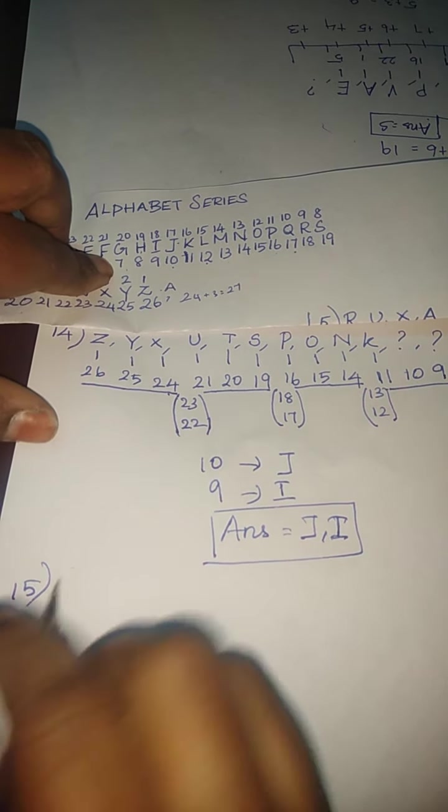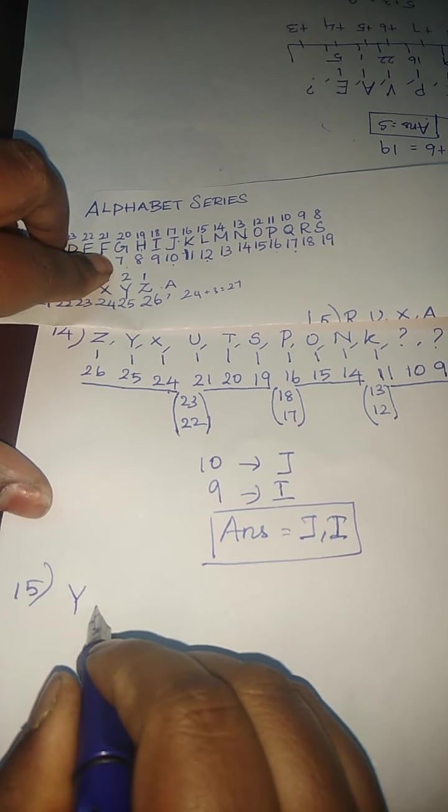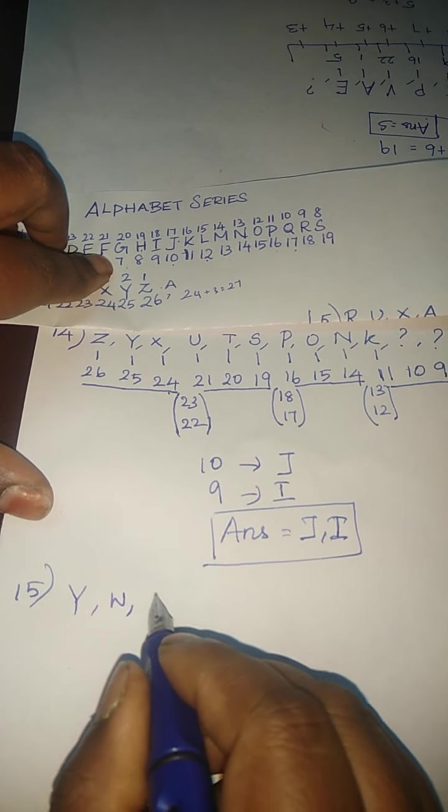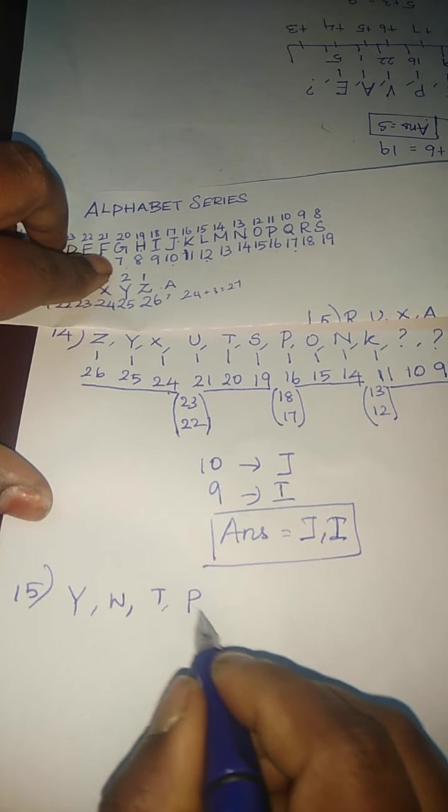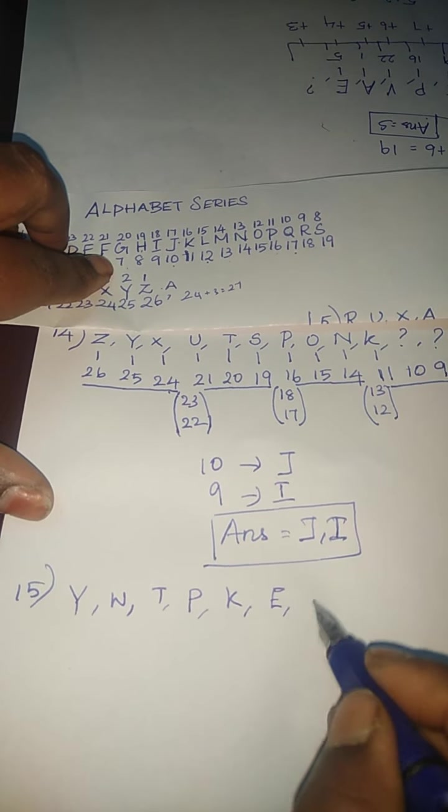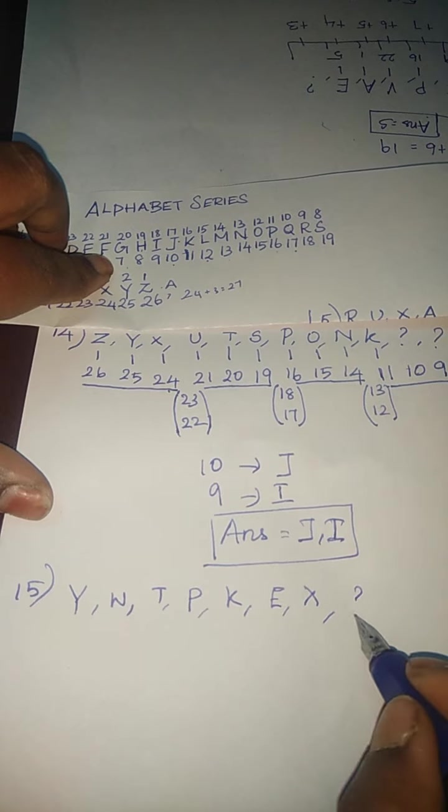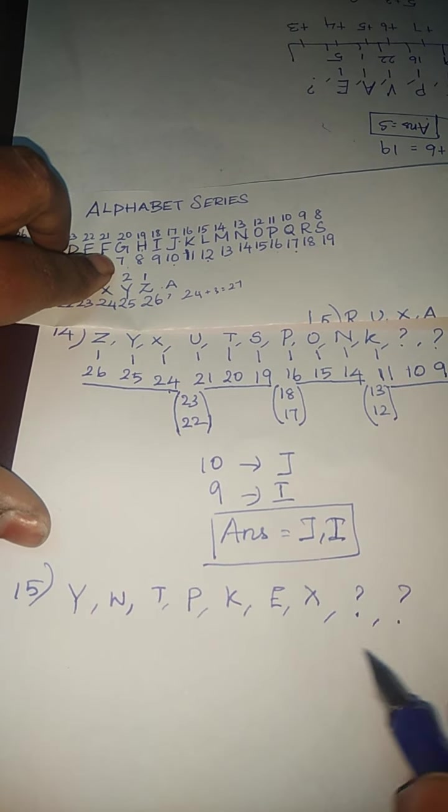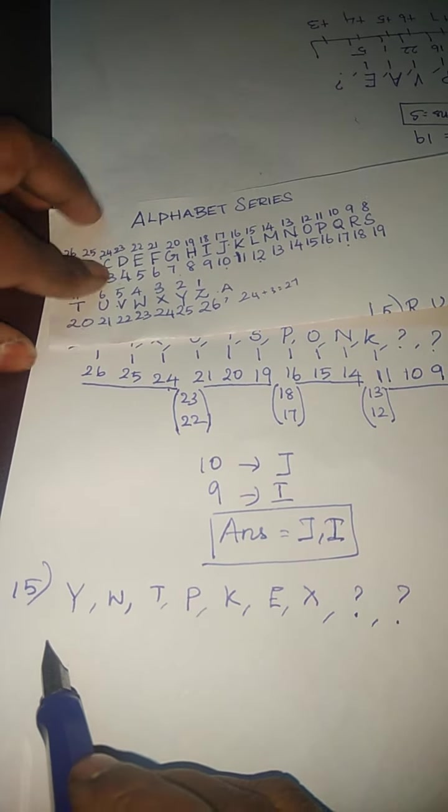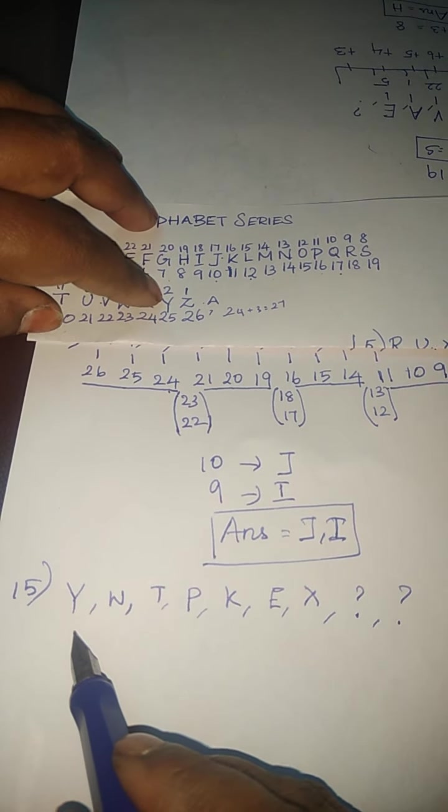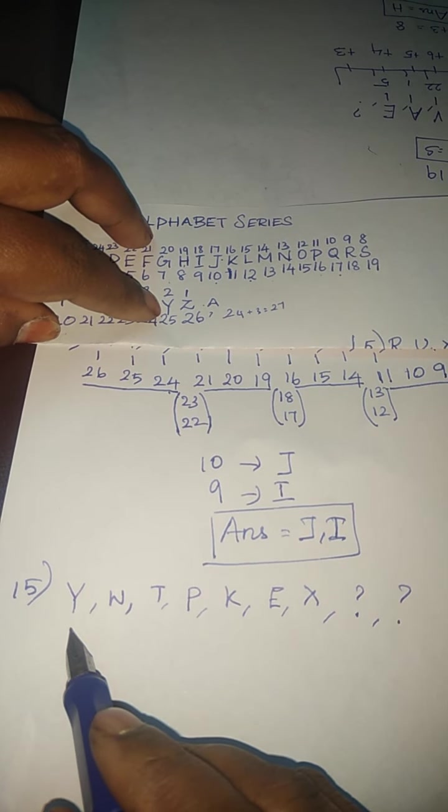Then we are moving to 15th sum. The question is Y, W, T, P, K, E, X, question mark, question mark.